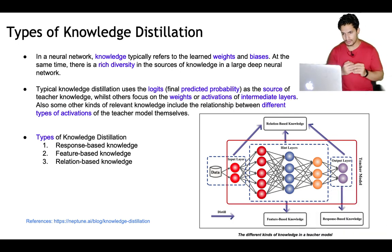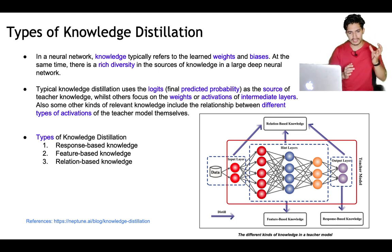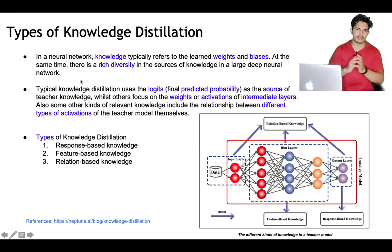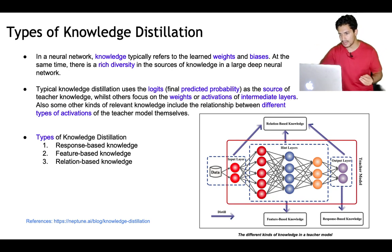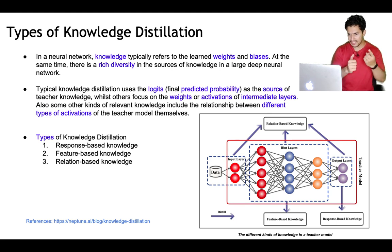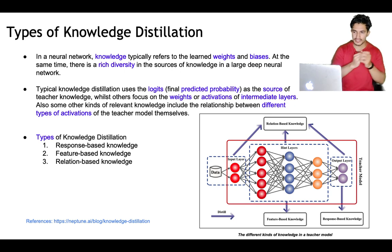So how does knowledge distillation work? The knowledge in a neural network, when a teacher model is trained and available, is in the form of learned weights, parameters, and biases. There is rich diversity in the source of knowledge of a deep neural network because it has many parameters — different parameters are learning different things. Knowledge distillation methodologies depend on: first, the final predicted probability of the teacher model.